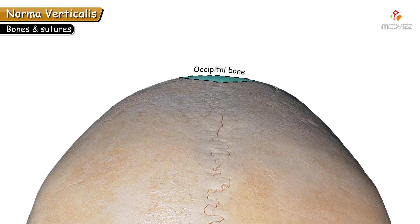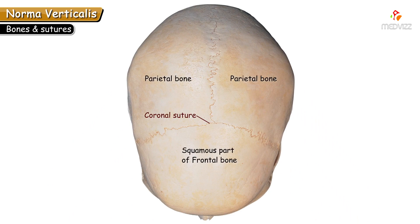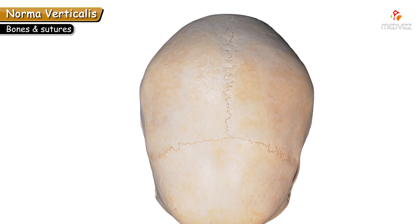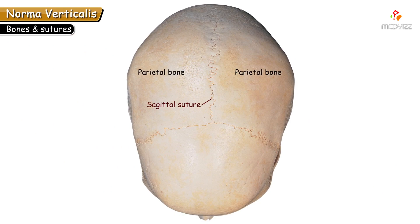The sutures joining these bones: the coronal suture runs across joining the frontal bone with the two parietal bones. The lambdoid suture connects the two parietal bones with the occipital bone. The sagittal suture is the midline suture connecting the two parietal bones.